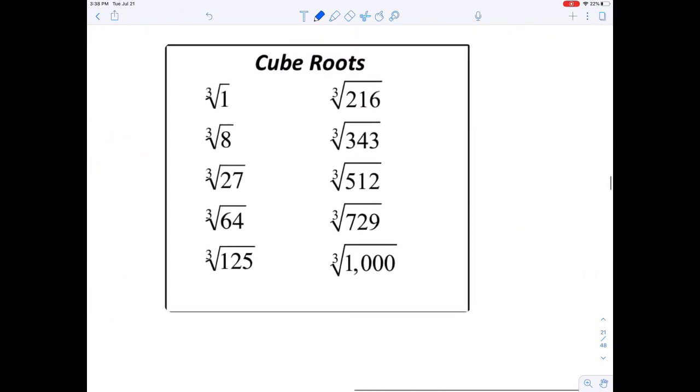And cubic roots are the same idea. What number times itself times itself? In other words, what three numbers that have to be the same multiply together to give you 1? What three numbers multiply together that have to be the same to give you 8? And so on.